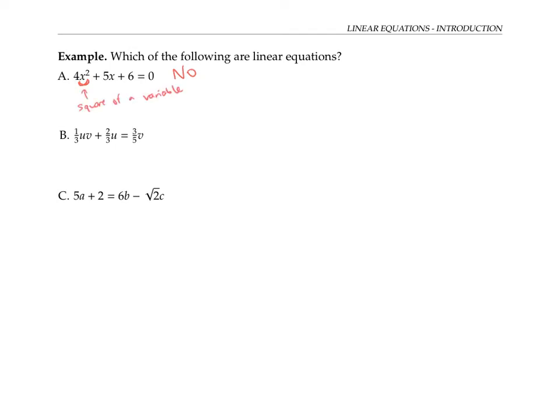The second equation is also not a linear equation because the one-third is multiplied by a product of variables, not just a single variable.